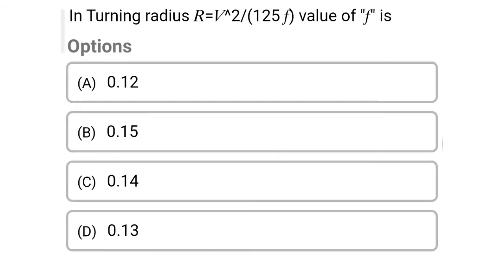So next question: in the turning radius formula R = V² / (125 × F), the value of F is — Option A, 0.12. Option B, 0.15. Option C, 0.14. Option D, 0.13. So the correct answer is Option D, 0.13.